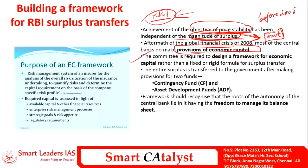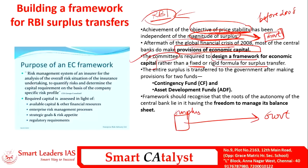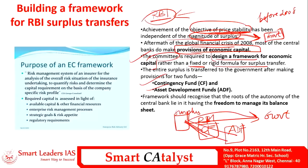As per this context, whatever surplus the RBI generates should be transferred to the government after making provisions for two funds. Before the surplus reaches the government, the RBI should first transfer money to two major accounts: one is the contingency fund and another is the asset development fund. Only the remaining surplus after these transfers should go to the government.